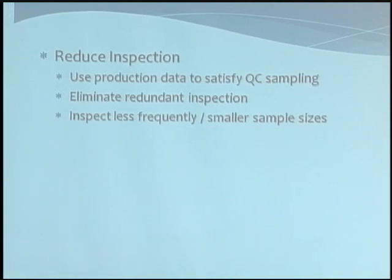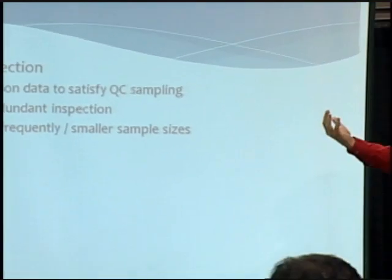Other ways to slash costs: consider reducing inspection. If you're doing in-process checks on one end and you've got final inspection with sampling plans on the other, some of the features you're sampling at final are also being checked in-process. If your measurement systems are good enough on the floor, give yourself credit for that. Have the software track that you've already done seven of those tests on the floor, so at final you only need to do the two that require specialized equipment. You can also eliminate redundant inspection, and if you have a good track record you can expand the time between checks.